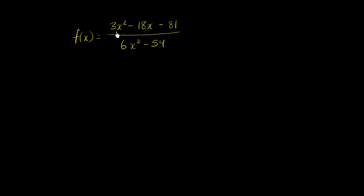We have f(x) equal to 3x squared minus 18x minus 81, over 6x squared minus 54. What I want to do in this video is find the equations for the horizontal and vertical asymptotes. I encourage you to pause the video right now and try to work it out on your own before I work through it.